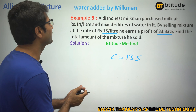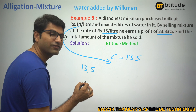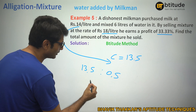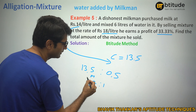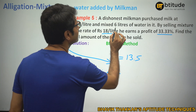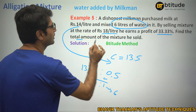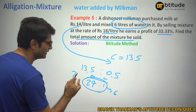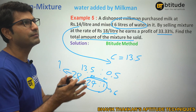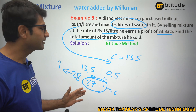The actual cost was 14 rupees, but you brought it to 13.5 by adding water. So you took milk worth 13.5 and 0.5 worth of water — in ratio that is 27 to 1, milk to water. The question says 6 litres of water was added and asks for the total amount of mixture sold. If 1 part equals 6 litres, then 28 parts equals 28 × 6 = 168 litres total mixture.